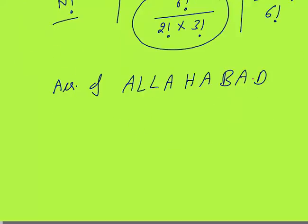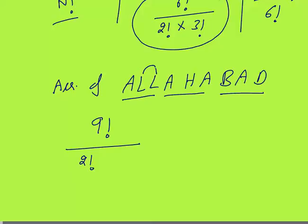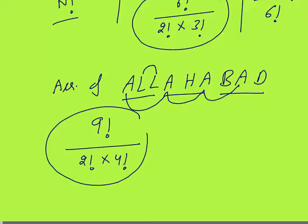Next: total arrangements of the letters of the word ALLAHABAD. There are 9 letters total. If all letters were different, the answer would be 9 factorial. But some are repeated: L is coming 2 times so divide by 2 factorial, and A is coming 4 times so divide by 4 factorial. The final answer is 9 factorial divided by 2 factorial times 4 factorial.